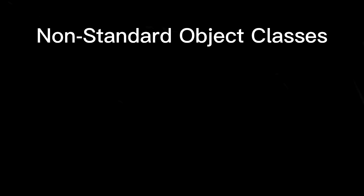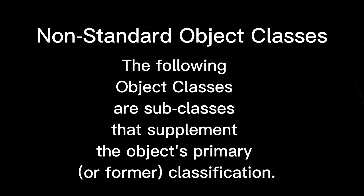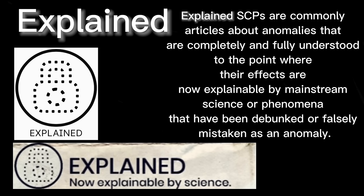Non-standard object classes: The following object classes are subclasses that supplement the object's primary or former classification. Explained SCPs are commonly articles about anomalies that are completely and fully understood to the point where their effects are now explainable by mainstream science, or phenomena that have been debunked or falsely mistaken as an anomaly.